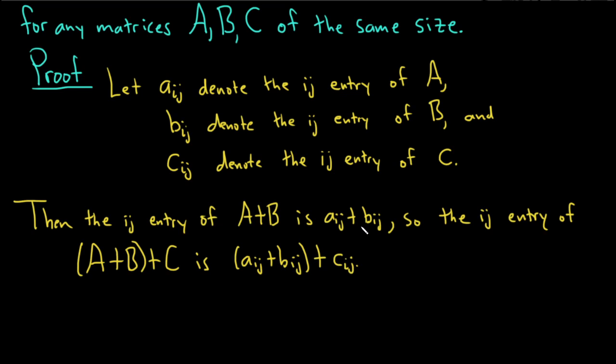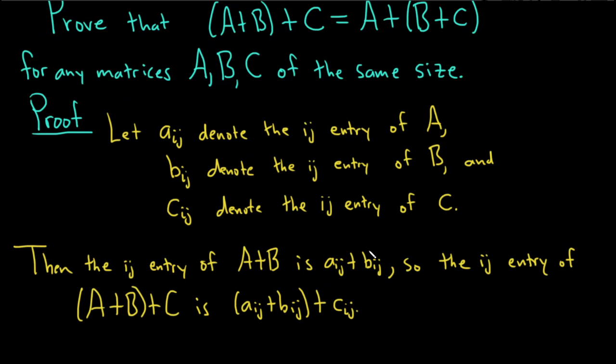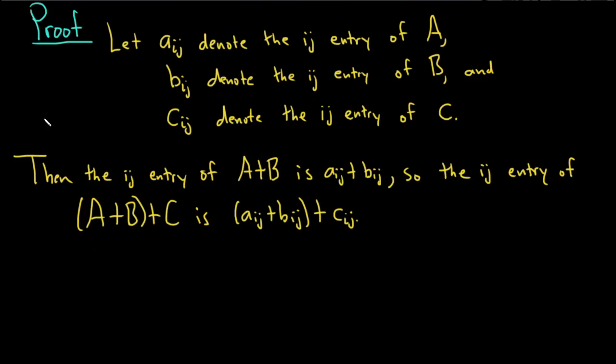So now let's investigate the right-hand side. So the right-hand side was A+(B+C). So note, I'll just say then, the ij entry of B+C is b_ij + c_ij.